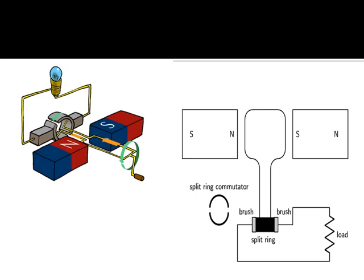هاي الدائرة، مثل ما تلاحظون، قسمت وصارت نصفين، نصفين حلقة. كل نصف حلقة راح يكون مربوط بطرف من هذا الملف، والطرف الثاني من الملف بالنصف الآخر. البراش راح يكون بالتماس بواسطة هذا الـ Rotor.